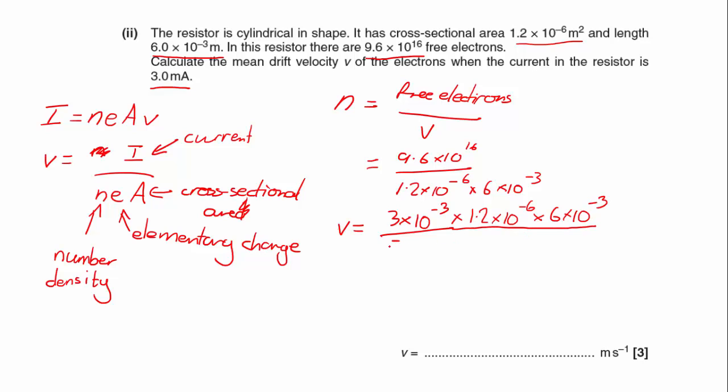Divided by 9.6 times 10 to the 16, multiplied by our elementary charge which is 1.6 times 10 to the minus 19, and multiplied by our cross-sectional area which is 1.2 times 10 to the minus 6 meters squared. And what we'll notice, they actually didn't need to tell us that, but I imagine that would have confused a lot of people if they didn't, because that will cancel out.